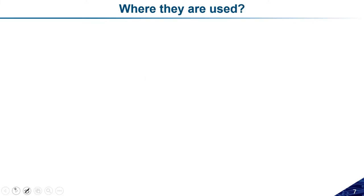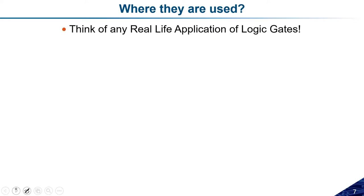Wherever you look, digital systems are present. Consider a mobile phone: when you speak, a microphone receives your voice signal, converts it to digital, processes it, encrypts the data, modulates it at certain frequencies, and then transmits it. Digital systems are everywhere. When designing any digital system, there are a few key things to consider.